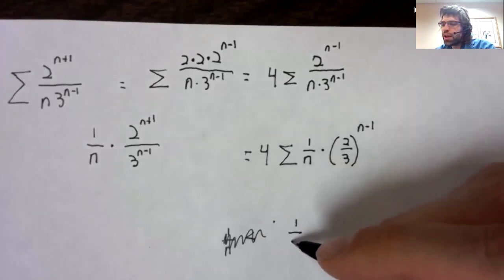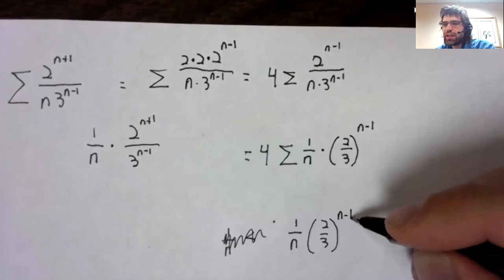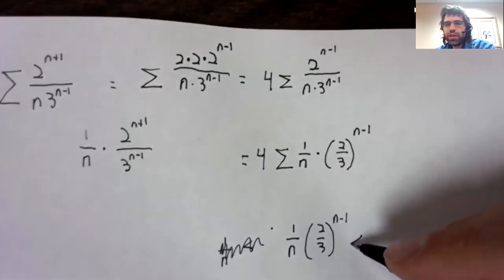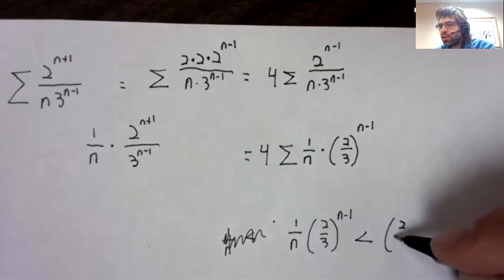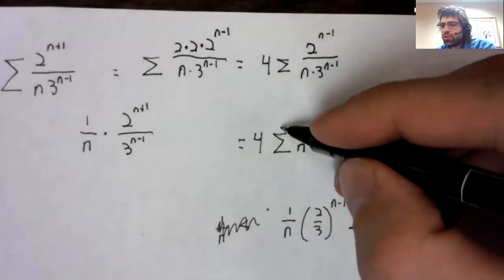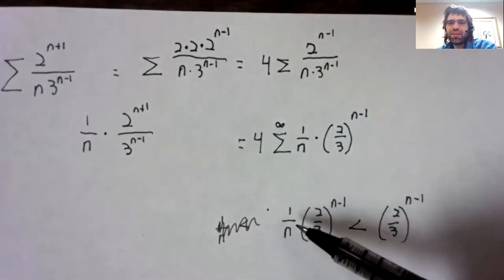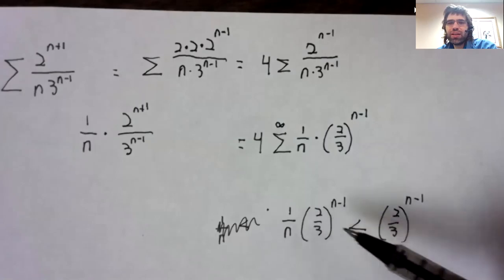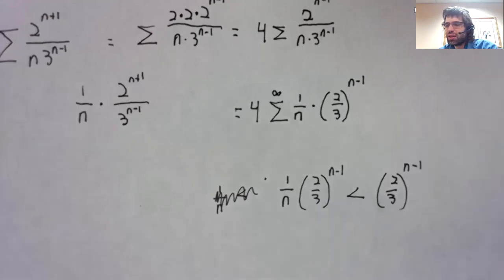One over n times two thirds to the n minus one is less than two thirds to the n minus one. n is going to infinity. If you have like one nth of something, it's going to be less than the original something.